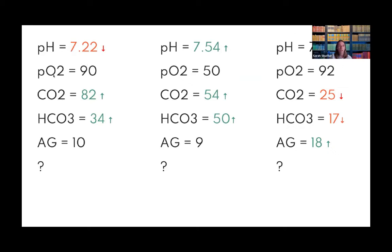Practice example 1: Check O2 — not hypoxemic. pH is low, so they're acidotic. CO2 is high — that's related, so it's a primary respiratory acidosis; high CO2 is driving the low pH. Bicarb is up — the kidneys are compensating a little. But since the pH is still abnormal, it's only partial compensation. Conclusion: primary respiratory acidosis with incomplete metabolic compensation.